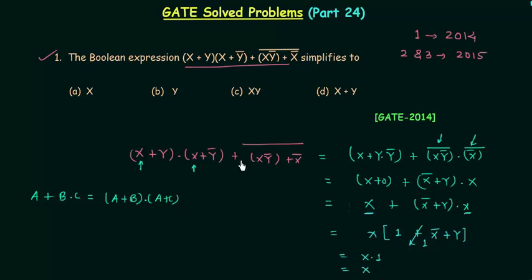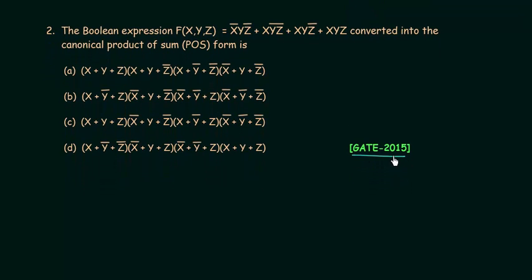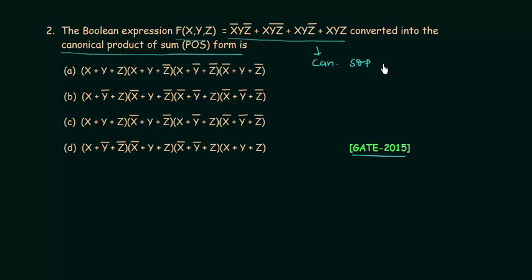So x is the answer and option A is the correct option. Now we will solve the second problem, which appeared in the GATE 2015 exam in the first paper. The boolean expression f is given and we have to convert it to the canonical product of sums (POS) form. The canonical sum of products (SOP) form is given.